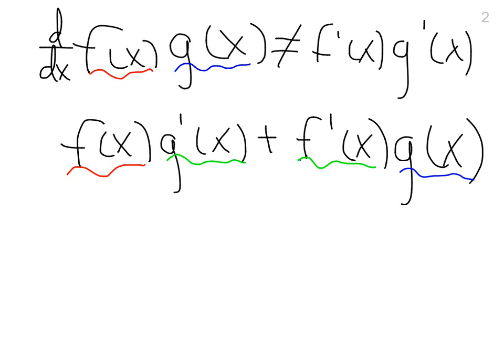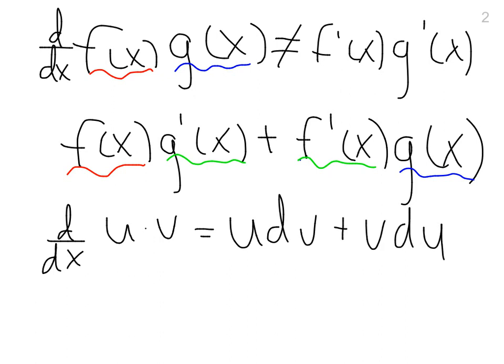So if you notice, you had the original function, then the derivative, then the other original function and its derivative. So the way that I learned it, and the way that's easy to remember, is that the derivative of u times v is u dv plus v du. You have to do one, the derivative of the other, the other derivative of the first one.